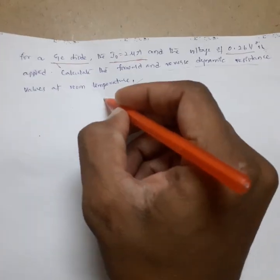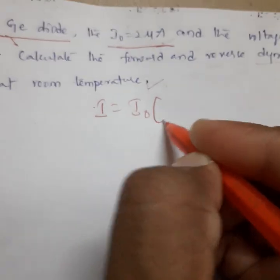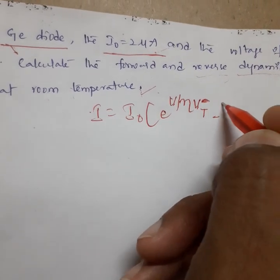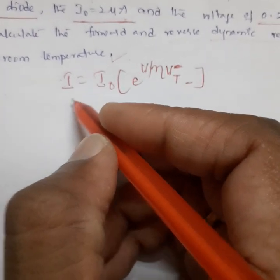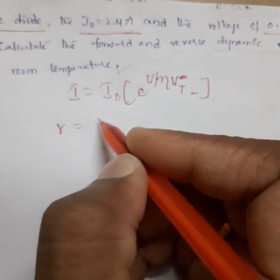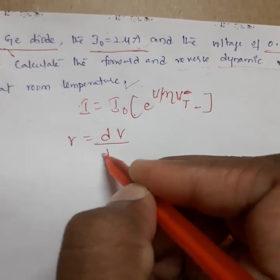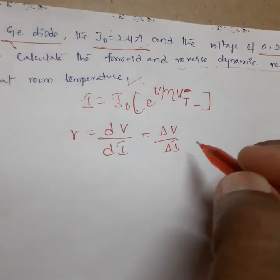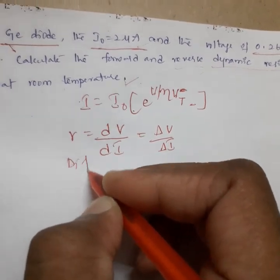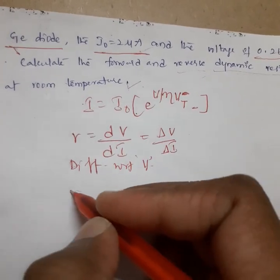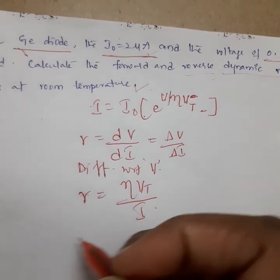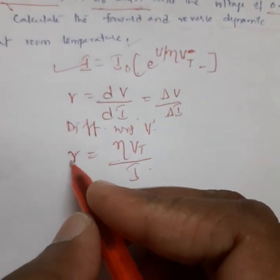We have the diode current equation. The dynamic resistance is given as the change in voltage to the change in current. By differentiating with respect to voltage, we get the dynamic resistance formula as ideal factor η times Vt divided by I. We need to find the current I to compute the dynamic resistance.